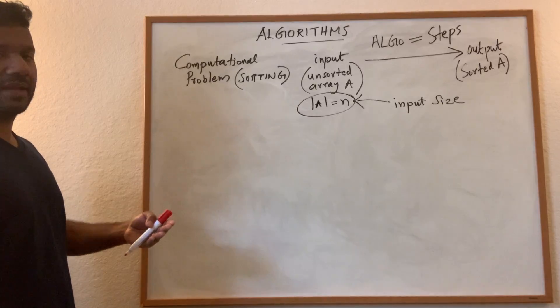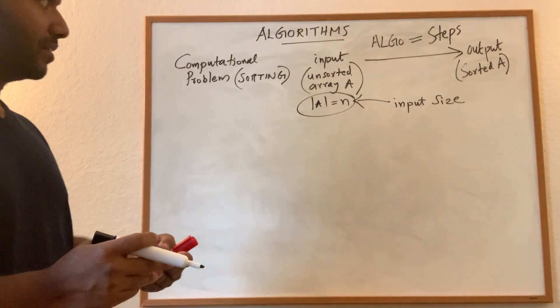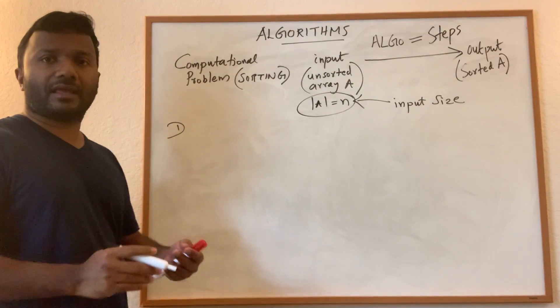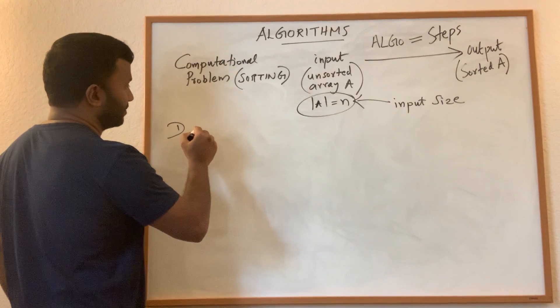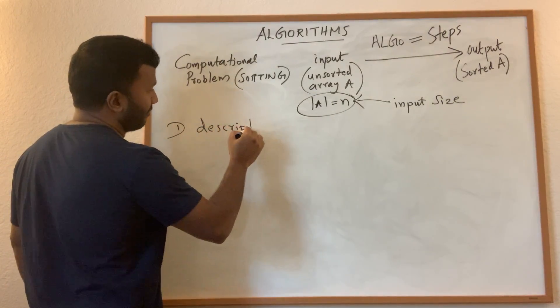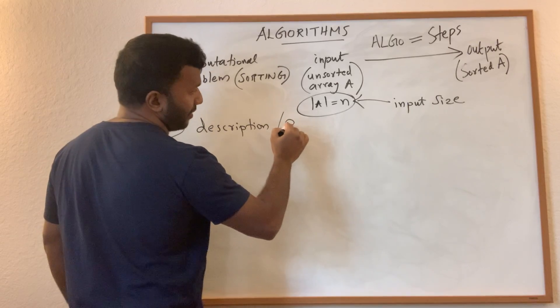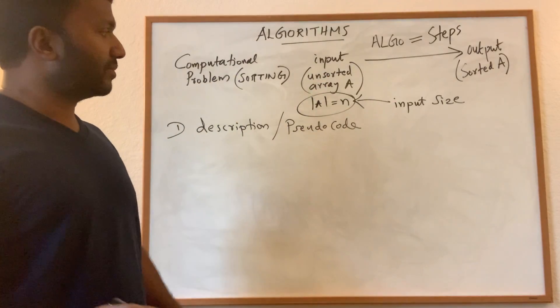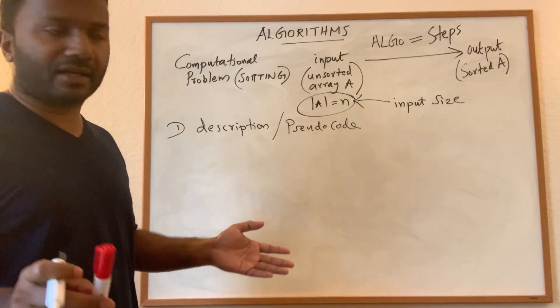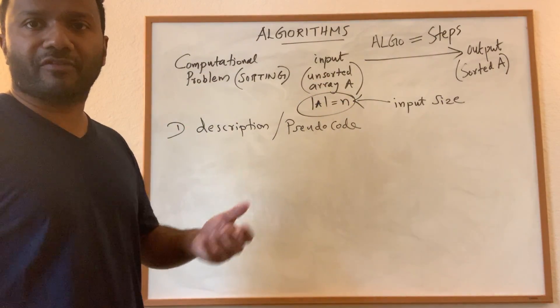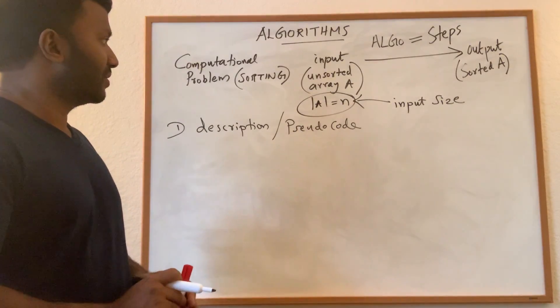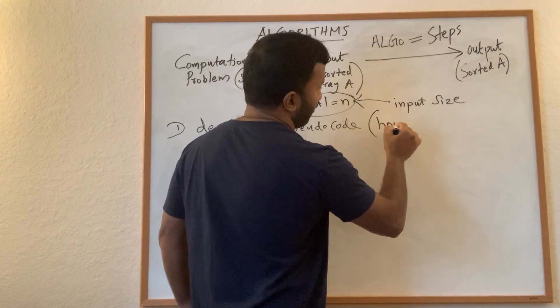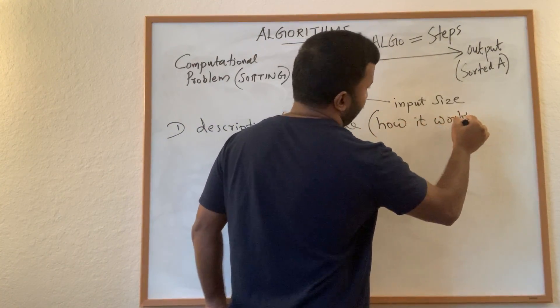Anytime we describe an algorithm we have to describe three things or three components of the algorithm. The first thing is basically the algorithm itself or the description of the algorithm, which is also known as pseudocode. So note that pseudocode is not really a program. It can be just something written in plain English or even with some little bit of math, could be informal. So essentially it tells you how your algorithm works.